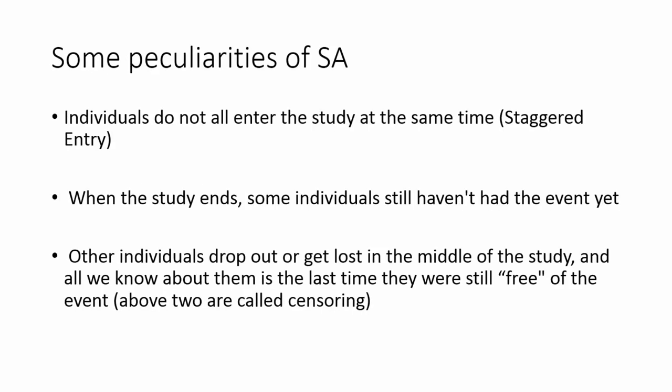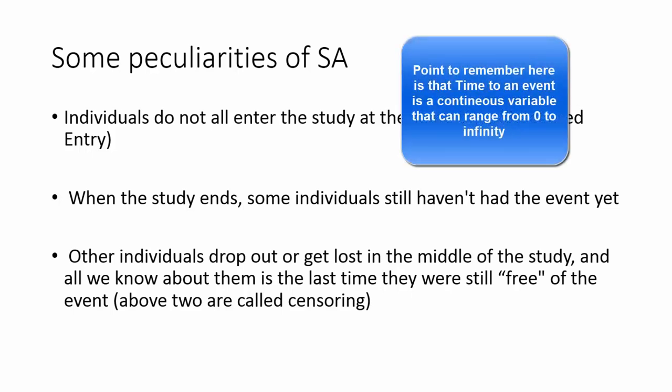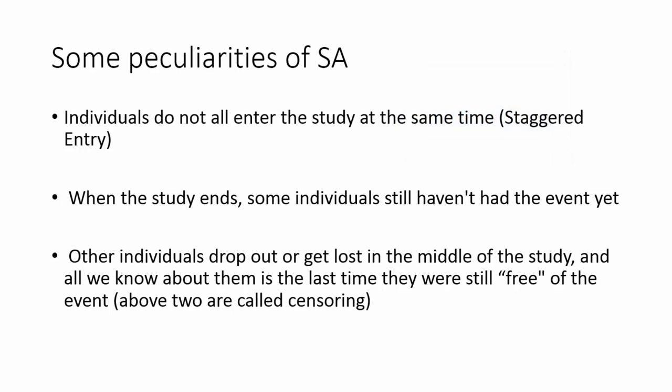Individuals in our population do not enter the study at the same time. When the study ends, some individuals still haven't had the event yet. For example, if you are doing a study on a patient who has undergone heart surgery and the time window is 5 years, if an individual is not dying in that 5 years, that can be considered as a censored event. Some individuals drop out of the study in the middle and we have no clue what exactly is happening to these individuals.